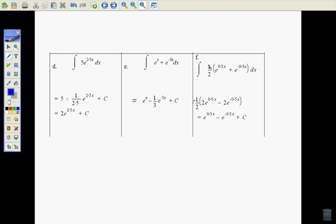And a half will stay out the front. We can just integrate the function there. e to the 0.5 of x would be 1 over 0.5, which is 2. e to the 0.5 of x and e to the minus 0.5 of x would become 1 over minus 2. And then once we multiply through here, it just gives us what we had there before.